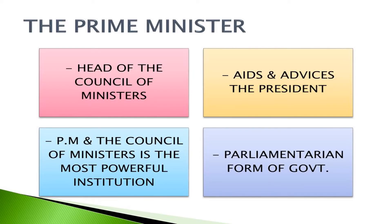Coming to the Prime Minister and the Council of Ministers — as you all know, the real head of our country is the Prime Minister. The main power of the country for five years is vested in the Prime Minister. The Prime Minister can appoint all the Ministers, the Prime Minister can dismiss the Ministers, and the Prime Minister is the head of the Council of Ministers.